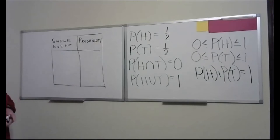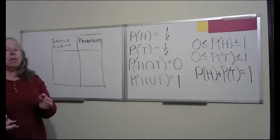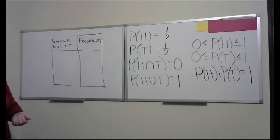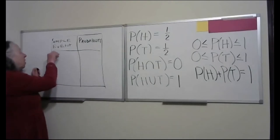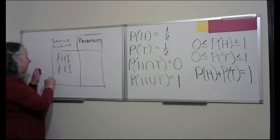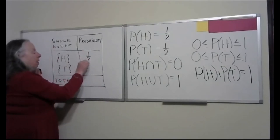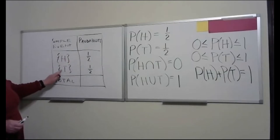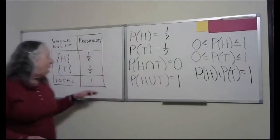A simple event is one of the sample points. When we talked about sample space, we had outcomes called sample points. So when we talk about a simple event — for example, with tossing a coin we get a head or we get a tail — the simple event is a subset of the sample space. The probability associated with getting a head is one half, a tail is one half, and our total is one. That's just putting the information into a table.